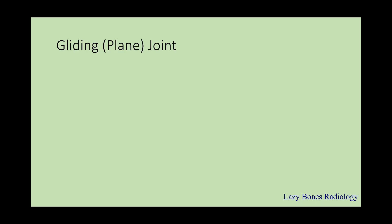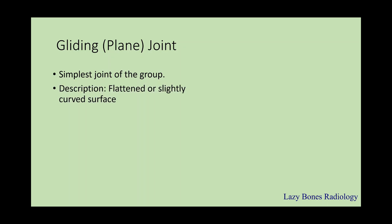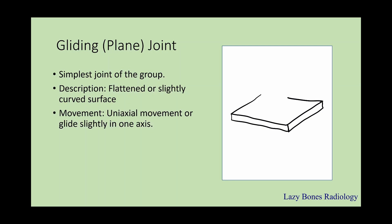The first is the glide joint, which is the simplest joint of the group. It is described by a flattened or slightly curved surface, as you can see in the diagram. This joint only has uniaxial movement, gliding slightly in one axis.